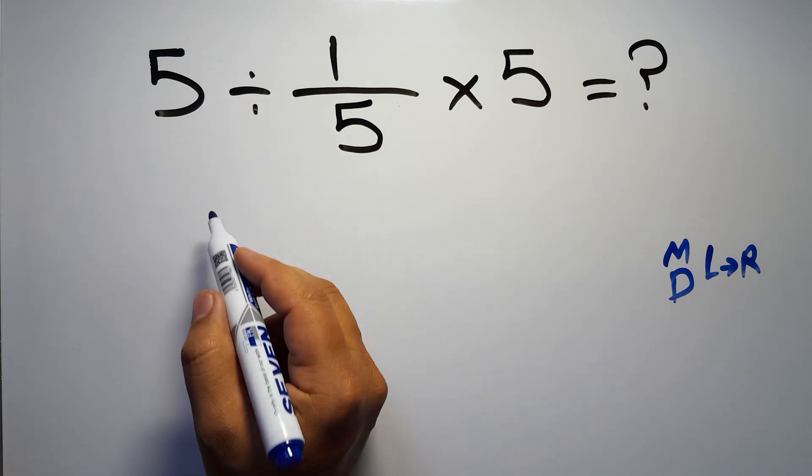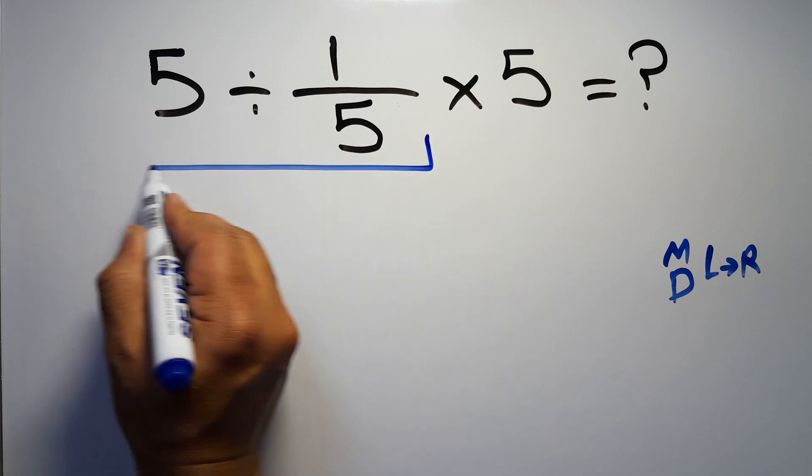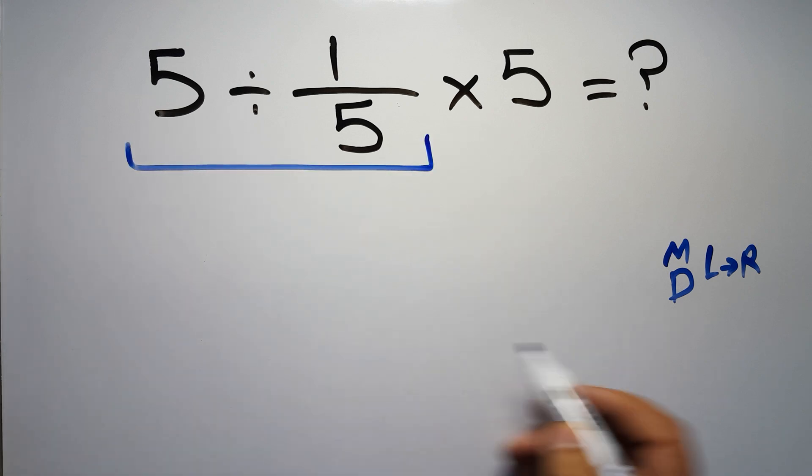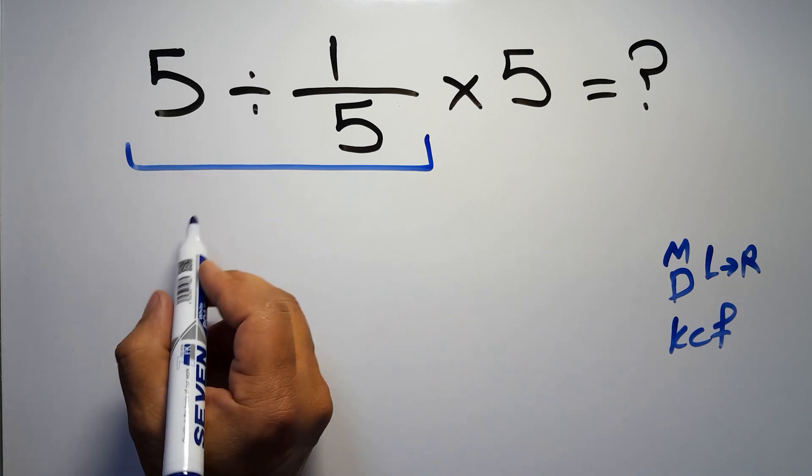So first, this division: 5 divided by 1 over 5. According to the KCF rule, K stands for keep, C stands for change, and F stands for flip. We can write keep the first fraction,